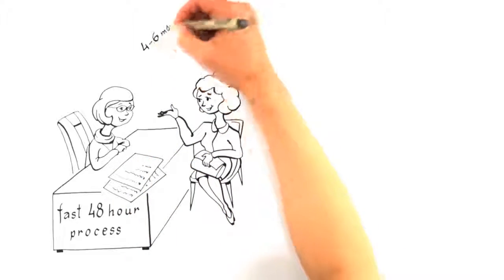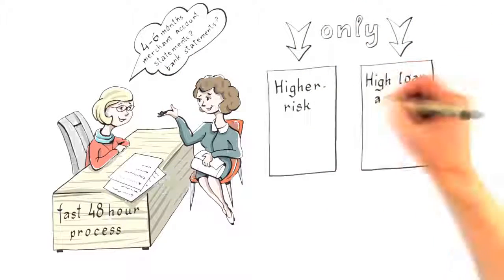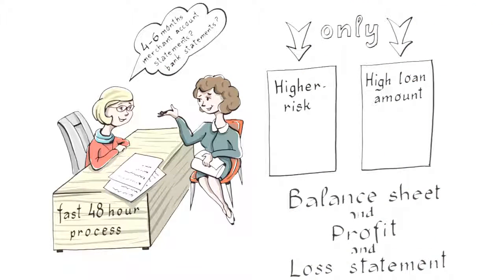You will love the easy and fast 48-hour underwriting process to get you approved. You will typically only be asked for 4-6 months of your past Merchant Account statements and possibly bank statements. Only in higher-risk, high-loan amount scenarios does underwriting typically request a balance sheet and profit and loss statement.